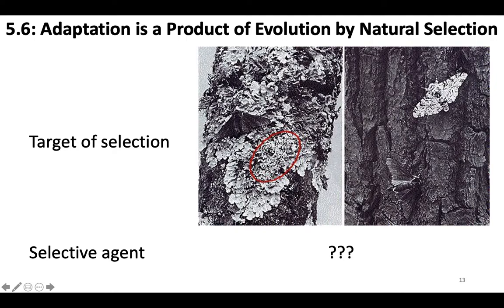The selective agent is birds eating the moths. Birds flying around looking for tasty moth treats — pre-industrial revolution they'd eat the dark one because it stands out, and post-industrial revolution once trees are darker and have no lichen, they can't see the black moth as well and eat the white ones instead. So in this example, the selective agent is the bird creating fitness differences among these organisms. We'll go through more examples in person at Winnie Palmer 2 because you'll be asked to do this kind of thing on the exam.